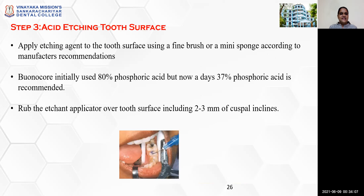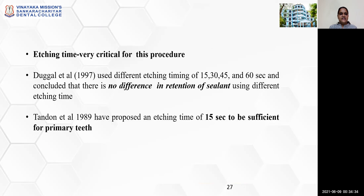Step 3 is acid etching the tooth surface. Apply the etching agent to the tooth surface using a fine brush or mini sponge according to the manufacturer's recommendations. Bonacore initially used 80% phosphoric acid, but nowadays 37% phosphoric acid is recommended. Wrap the etching applicator over the tooth surface including 2–3 mm of cuspal inclines. Dougal et al. in 1997 used different etching times of 15, 30, 45, and 60 seconds and concluded there is no difference in sealant retention. Tanden et al. in 1989 proposed 15 seconds etching time to be sufficient for primary teeth.